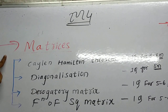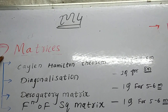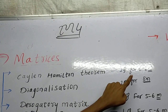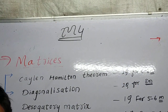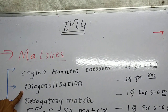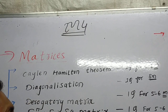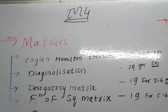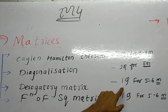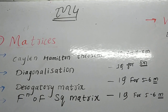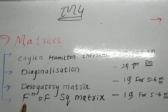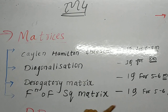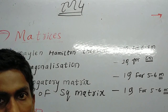From matrices, Cayley-Hamilton theorem — one question may be asked for six to eight marks. Diagonalization — one question for eight marks. Derogatory matrix — one question for five to six marks. And the last, function of square matrix — one question for five to six marks.